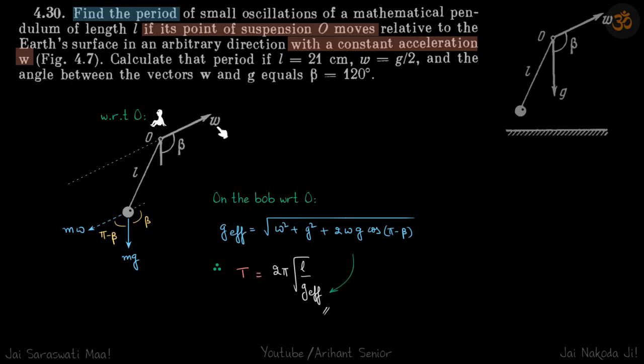With respect to point O, there will be a pseudo force on the bob in the opposite direction with value MW. The other force is of course MG, so with respect to point O there are these two forces.